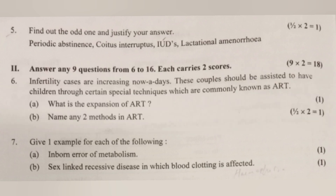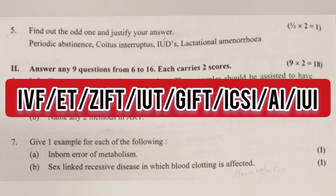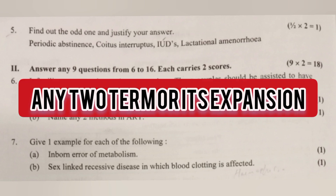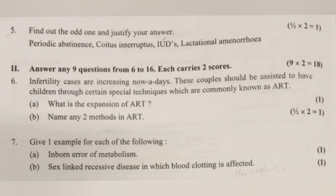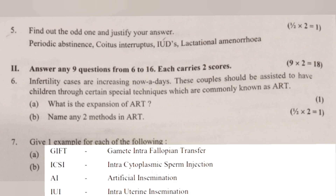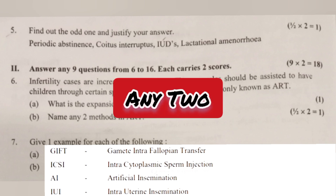B. Name two methods in ART. Answer: IVF (In Vitro Fertilization), ET (Embryo Transfer), GIFT (Gamete Intra Fallopian Transfer), ICSI (Intra Cytoplasmic Sperm Injection), AI (Artificial Insemination), IUI (Intra Uterine Insemination), ZIFT (Zygote Intra Fallopian Transfer) — write any two.